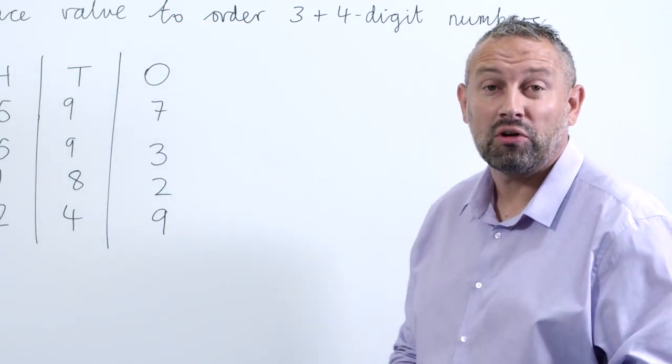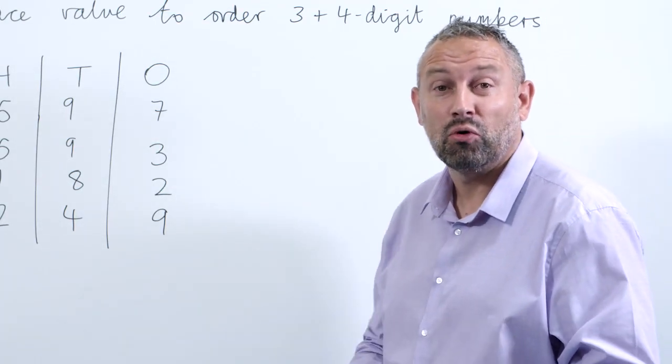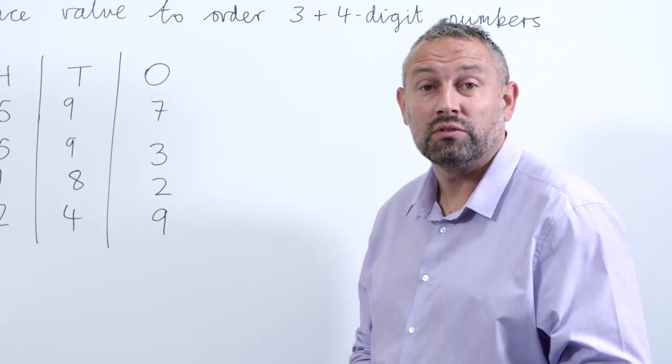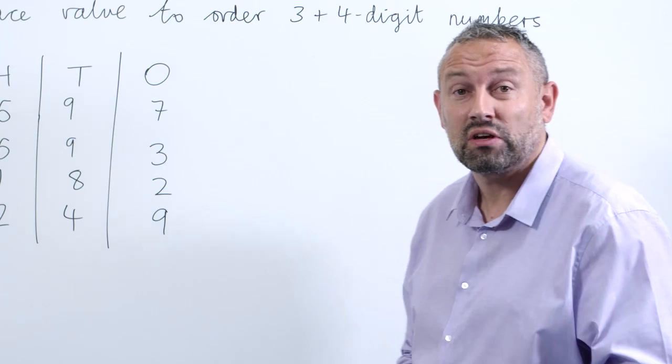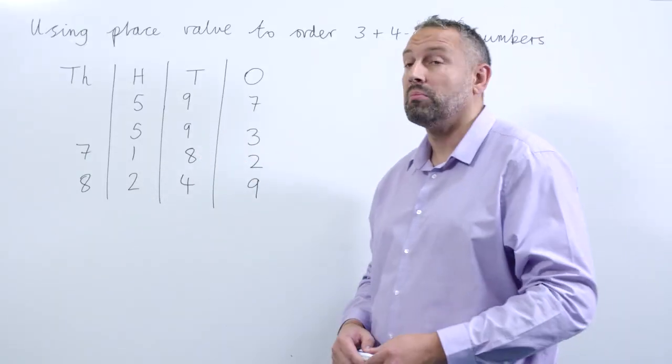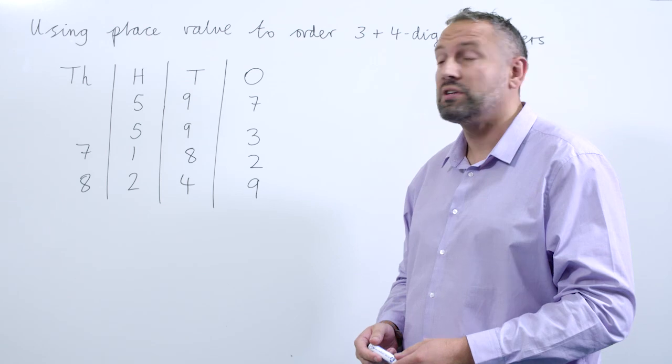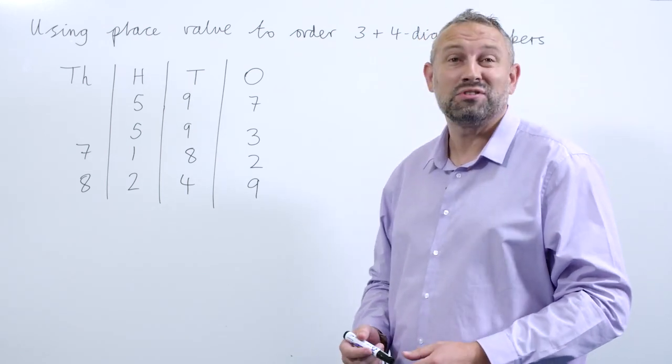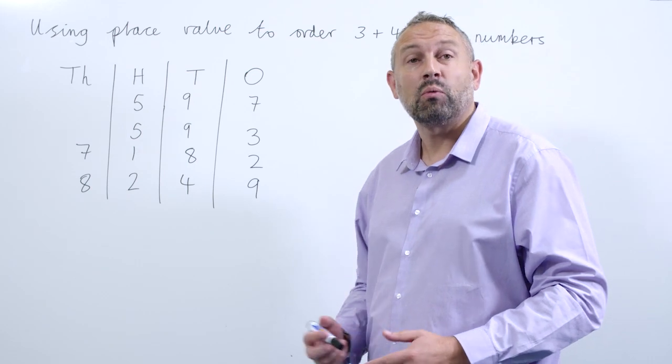Hi, my name is Ben and in this video we're going to be looking at how to use place value to order three and four digit numbers. Now we've already looked at place value in previous videos and the importance of it. So here we've got four numbers: 597, 593, 7182, and 8249. Now we want to order these numbers in descending order.